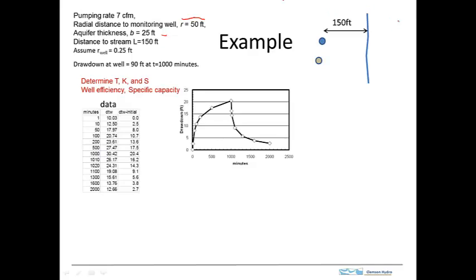And we can see that over here on this map. So we've got a small sketch map that shows the site. This is a stream, and here's the pumping well and the monitoring well. The radius of the well is given, and we have also the drawdown at time equals 1,000 minutes. So the objective here is to determine these things. The test was conducted, and here are the data.